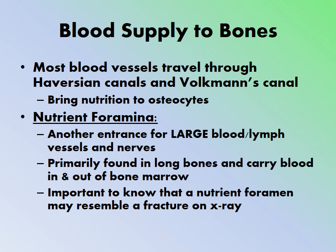Regarding blood supply to bones: most blood vessels travel through the Haversian canals and Volkmann's canals, bringing nutrition to the osteocytes. There is also a nutrient foramen in the bone — another entrance for large blood vessels, lymph vessels, and nerves. It is primarily found in long bones and carries blood in and out of the bone marrow. Importantly, a nutrient foramen may resemble a fracture on an x-ray.